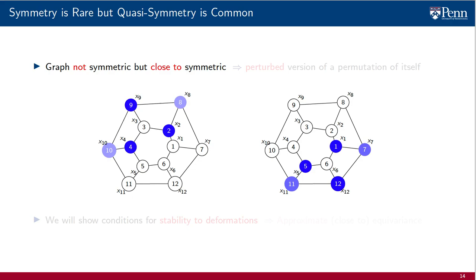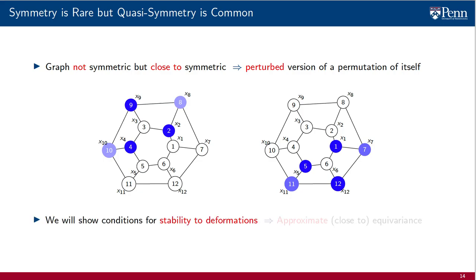An important point to make is that perfect symmetries are rare. Regular graphs are nice abstractions, but they do not appear often in practice. But we do have situations where graphs are close to being symmetric, as we illustrate here. The graph is a perturbed version of a permutation of itself. Thus, there is no interest in exploiting perfect symmetries, but there is interest in exploiting quasi-symmetries. If this were a recommendation system, our user similarity networks are not identical, but some of us will have user similarity networks that are close.